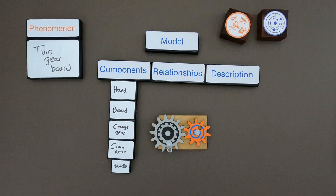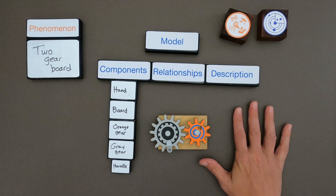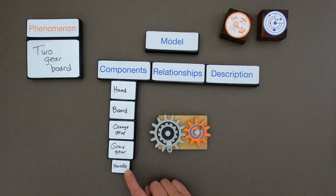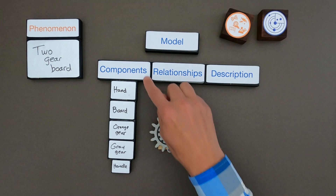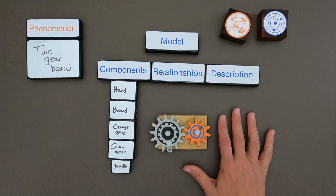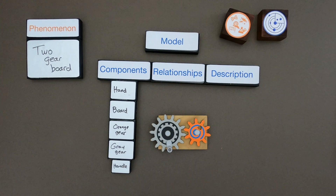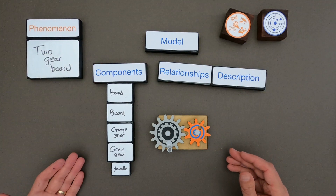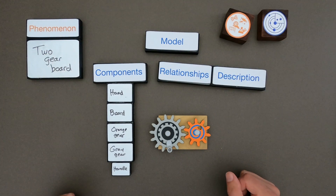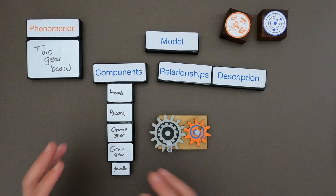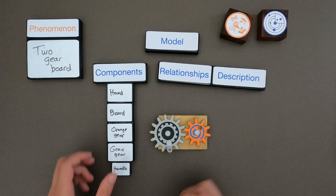The parts I included in my model are going to be my hand, the two gears, the board, and the handle - and you can see some hierarchy here as well. Components don't have to be physical things; I could model sound, light, or even processes. Now I have to decide how I'm going to represent the model. When you're just getting started on modeling, a really good way is to just draw what you think is going on.